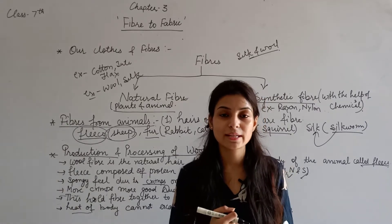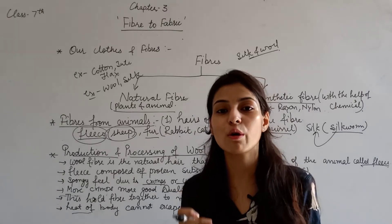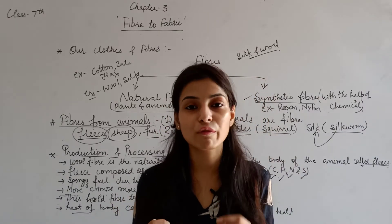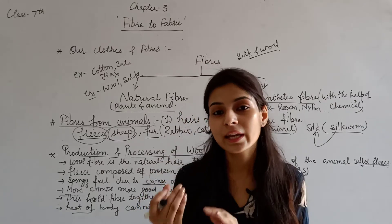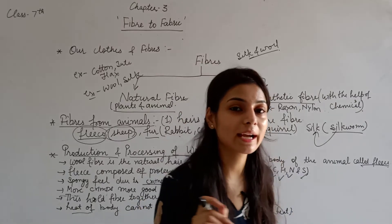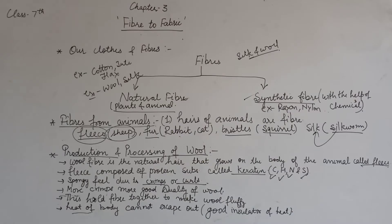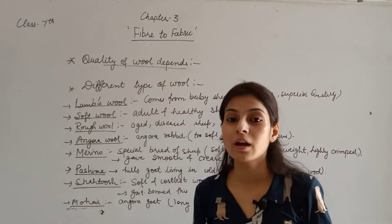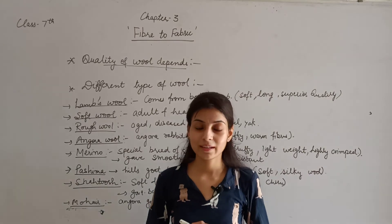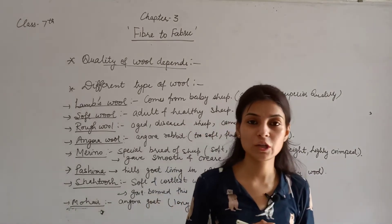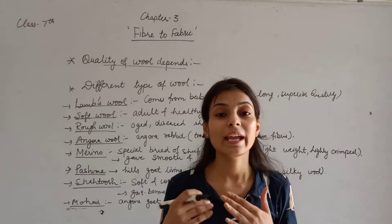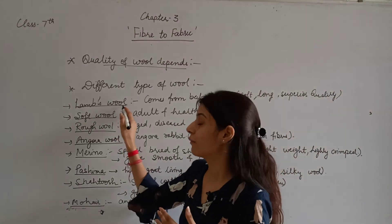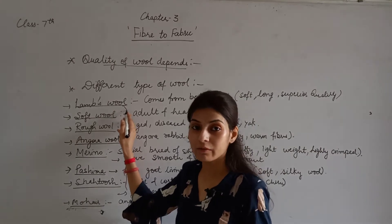Basically, there are two types of hair present on wool-bearing animals: thick hair and soft hair. Soft hair is used to make fibers, while thick hair is used for other purposes. The quality of wool depends on the animal's health and age.